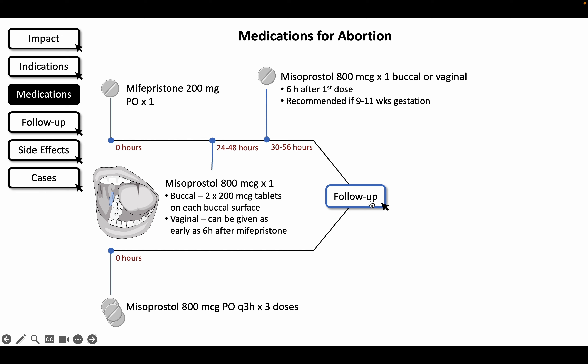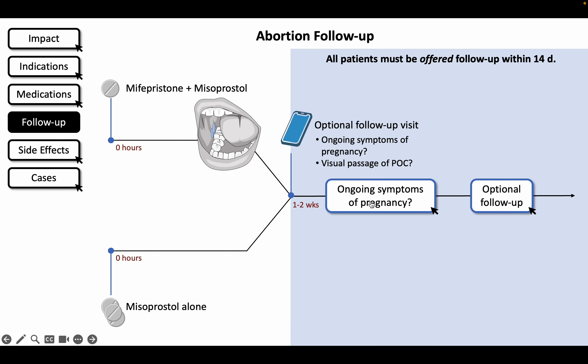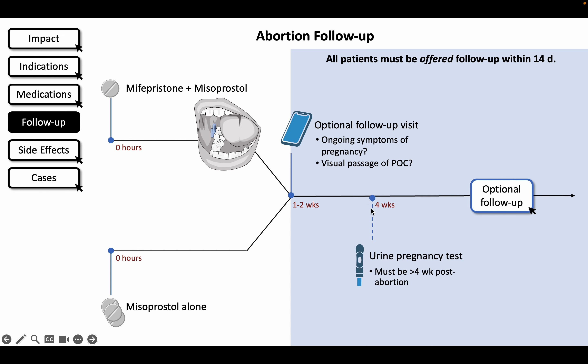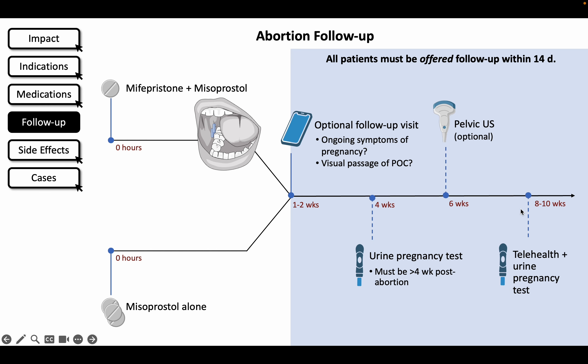According to 2020 practice guidelines from the National Abortion Federation, follow-up should be offered within 14 days, though patients may opt for self-assessment. If they have ongoing symptoms of pregnancy 1 to 2 weeks after the abortion, such as breast tenderness and morning sickness, have ongoing bleeding, or have not passed clots, they should be referred to gynecology for further evaluation. Alternatively, the patient could repeat a urine pregnancy test at home or in clinic after 4 weeks have passed, with referral to gynecology if it's positive.